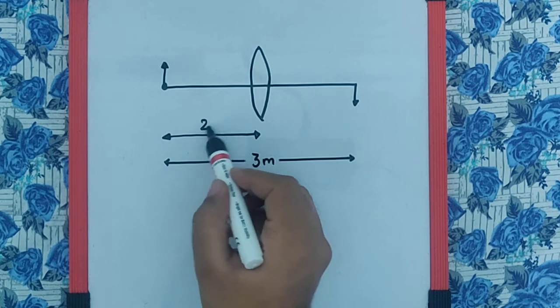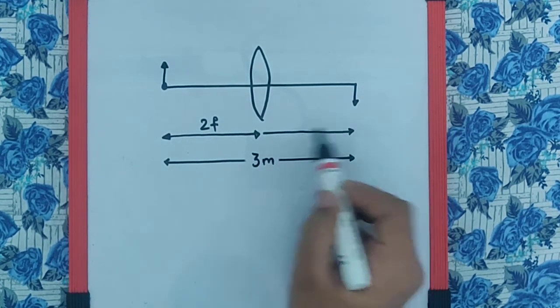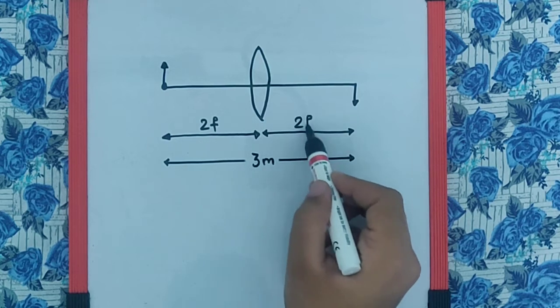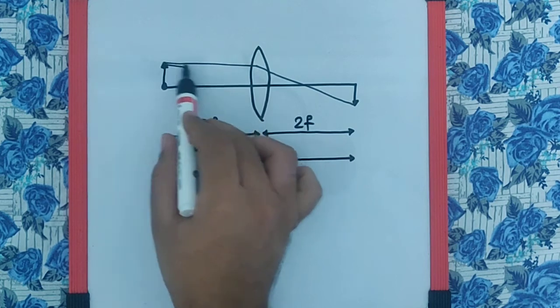we can consider it to be 2f, only then the image will also be formed at a distance 2f, which means the image will be of the same size as the object.